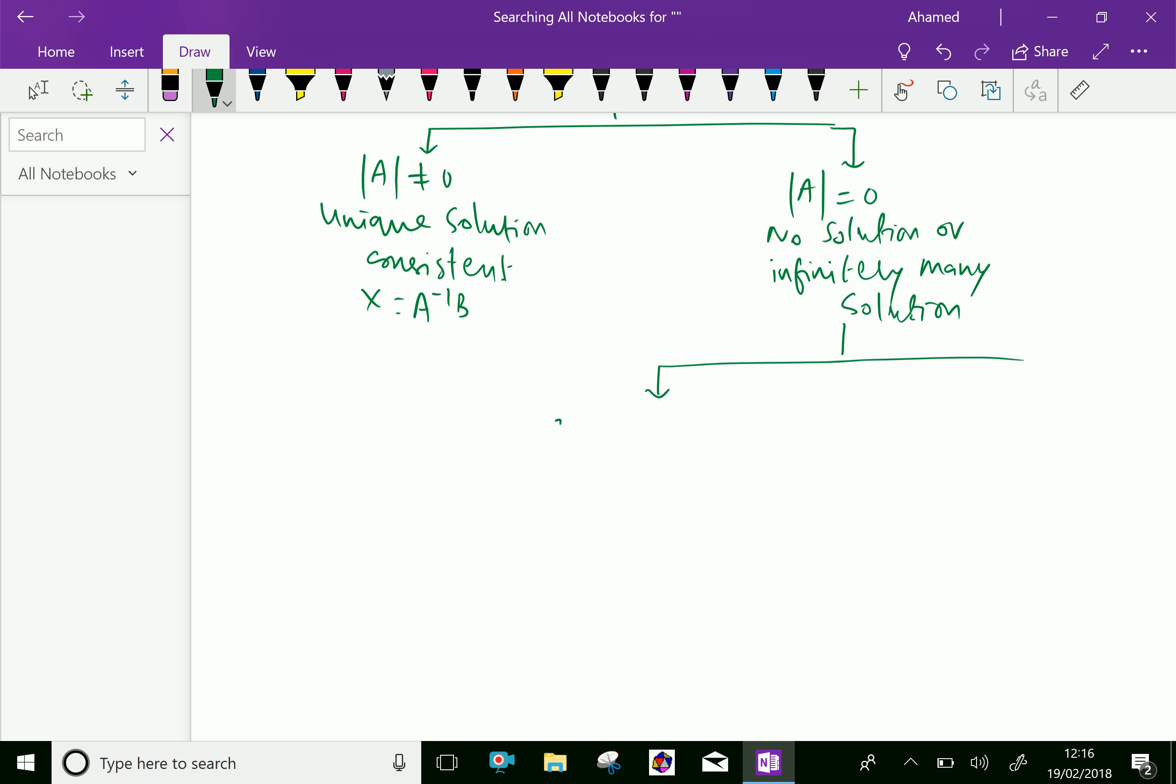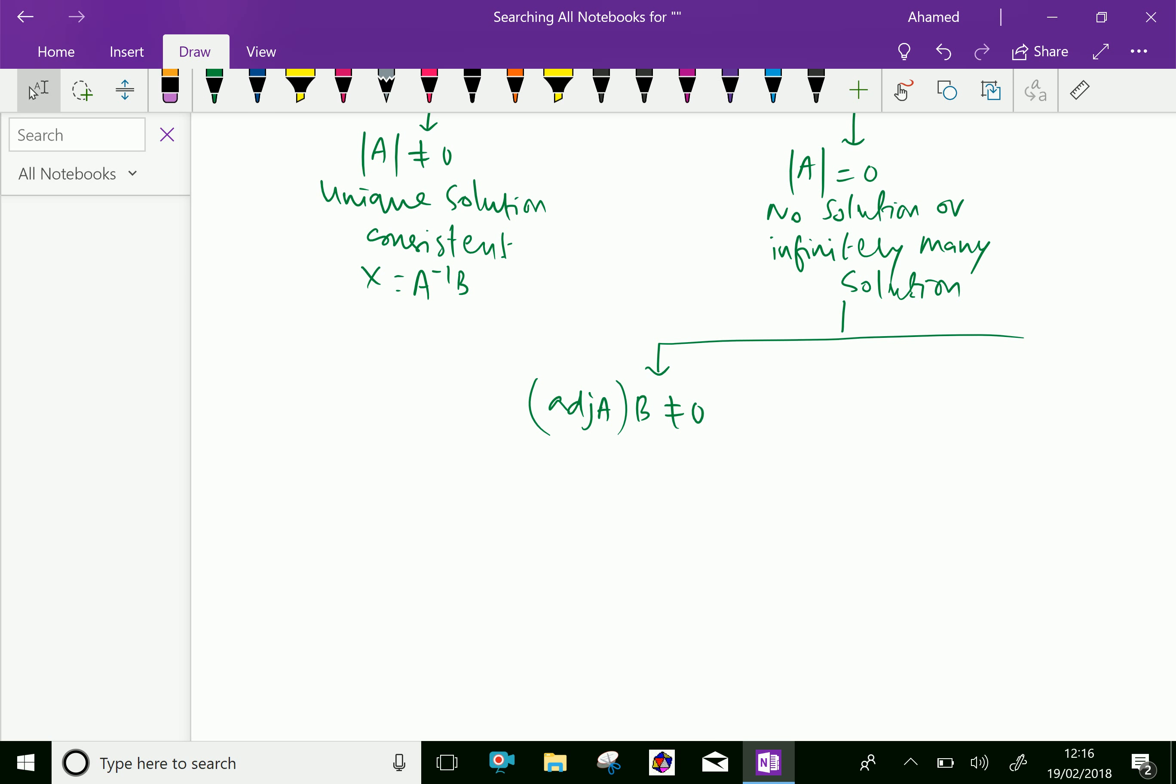If you have to find adjoint A into B, if it is not equal to zero, then we can say no solution and the system is inconsistent.